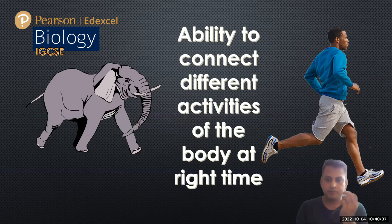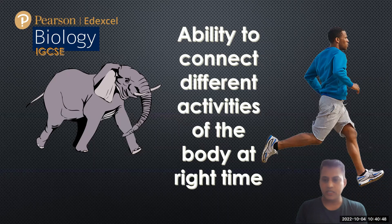Coordination is defined as the ability to connect different activities of the body at the right time. If we look at this person, one of the different activities we can see is the man running, which is one activity, but the rest of the activities we can't see.